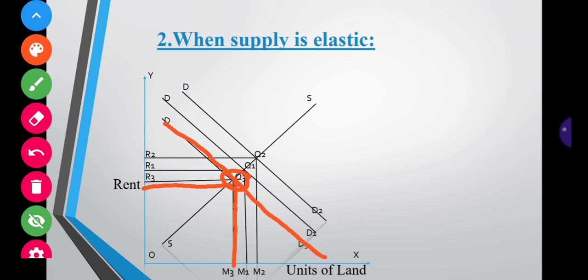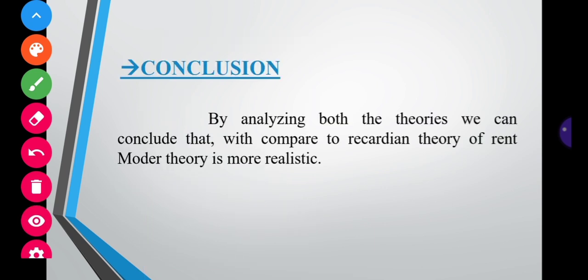Rent is a dependent factor which depends upon the supply of land and the demand for land, according to modern economists. In conclusion, compared to the Ricardian Theory of Rent, the Modern Theory of Rent is more realistic. The Ricardian theory has its importance, but when we compare the two, the Modern Theory of Rent is more realistic in nature. In the next video, we will discuss the remaining portions of the syllabus.